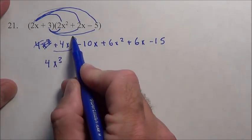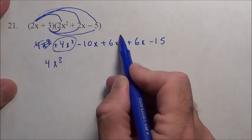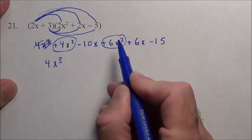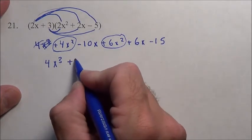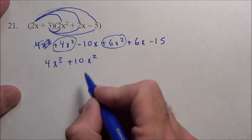Now here, 4x squared. Are there any other x squareds? Yes, plus 6x squared. 4 with 6 is a total of 10 of those x squareds.